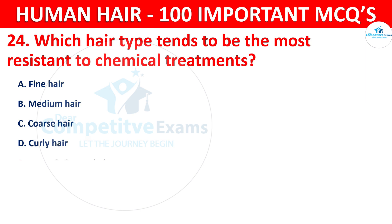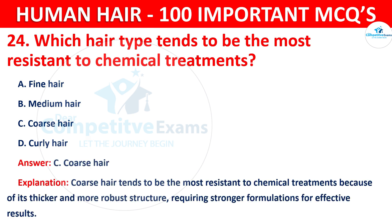The correct answer is C — coarse hair. Coarse hair tends to be the most resistant to chemical treatments because of its thicker and more robust structure, requiring stronger formulations for effective results.